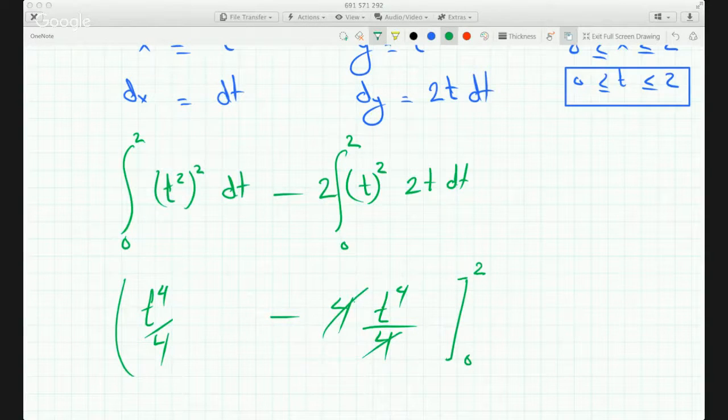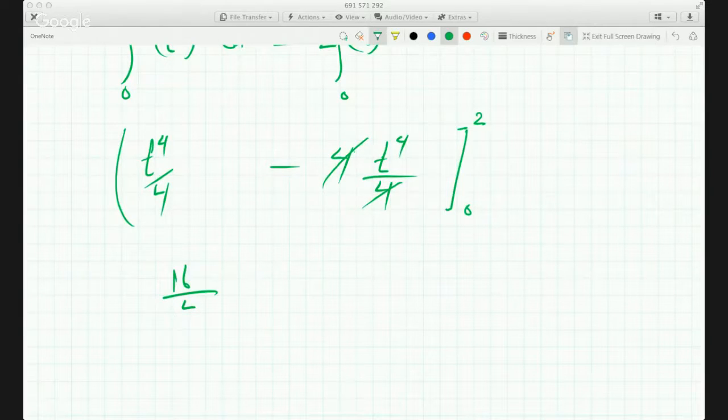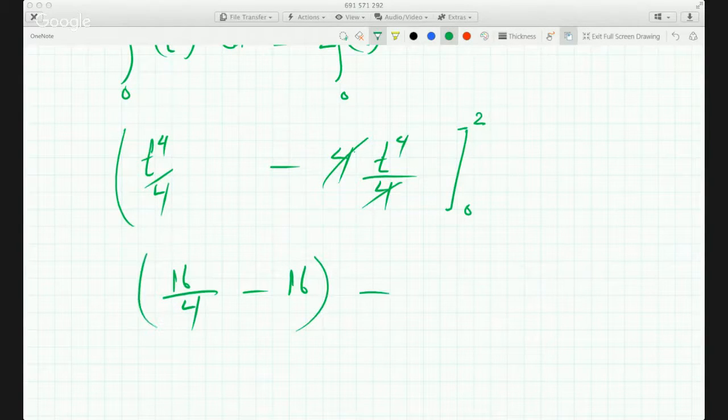And then if I plug it in, I would get upper bound first, 16 over 4 minus 16, and 0 would make the first one 0, and the second one is here.